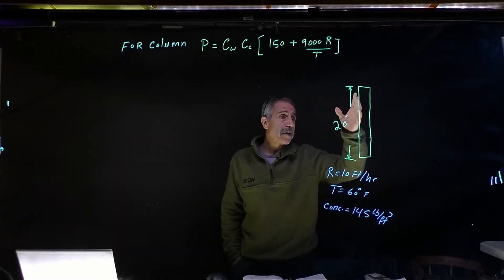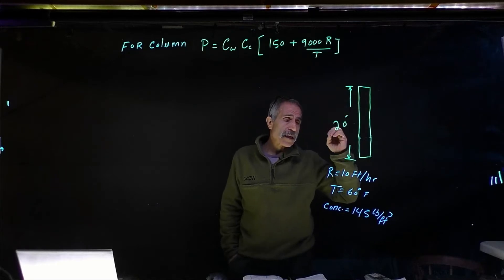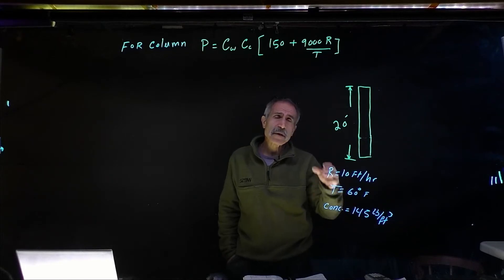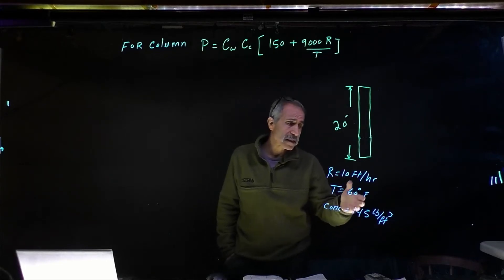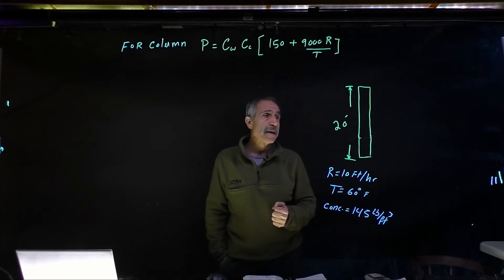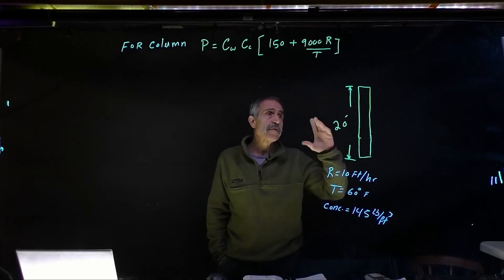We have this concrete column that is 20 feet tall and the rate of the placement is going to be 10 feet per hour. At the time of placement, the temperature for the concrete is going to be 60 degrees Fahrenheit and the concrete we're going to use is 145 pound concrete. This is some of the information we have, so let's get to work.